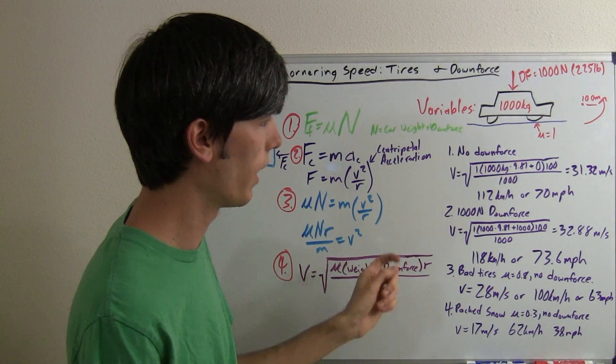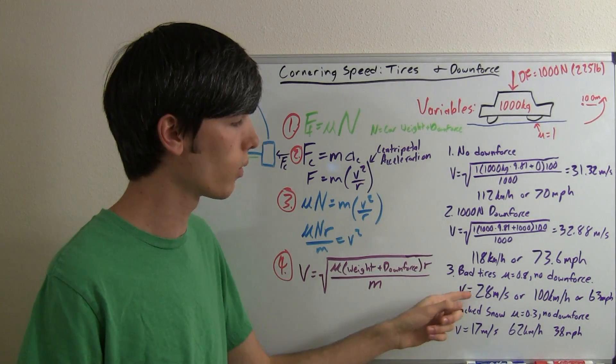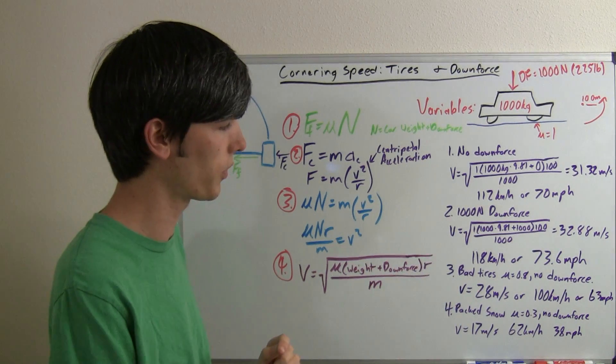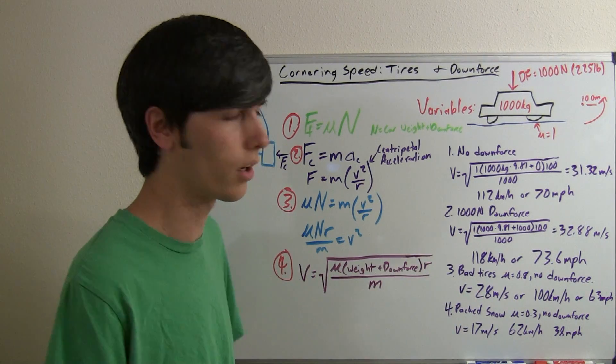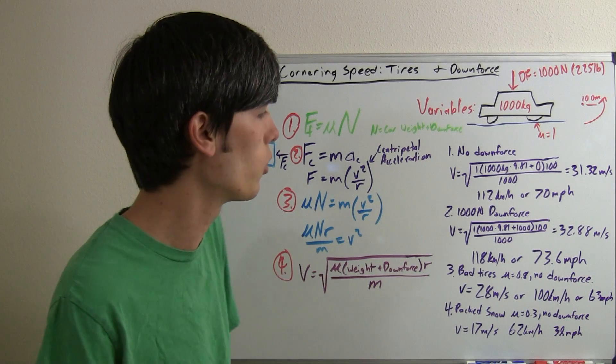And in doing so, it reduces the maximum speed that we can go around this corner to 28 meters per second, or about 100 kilometers an hour, or 62 miles per hour.